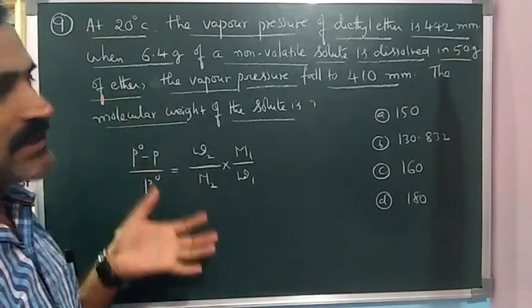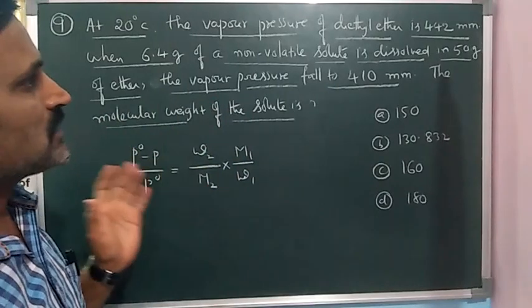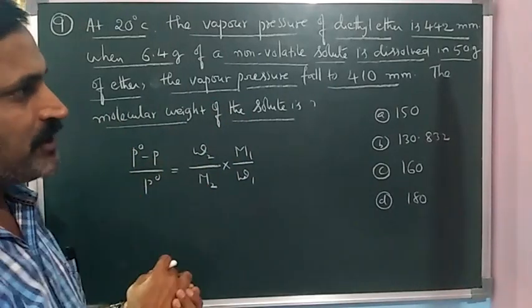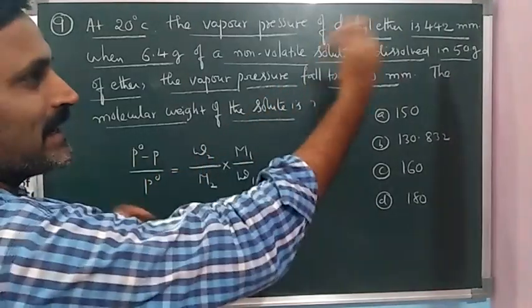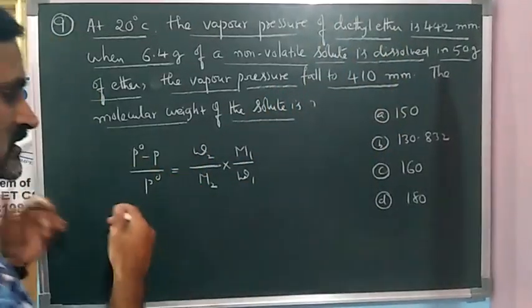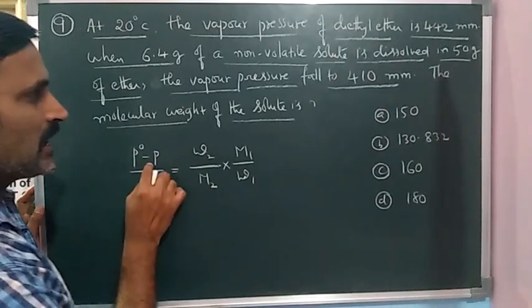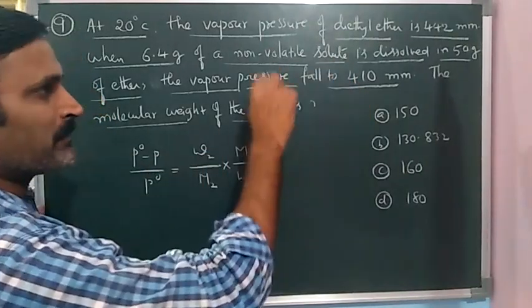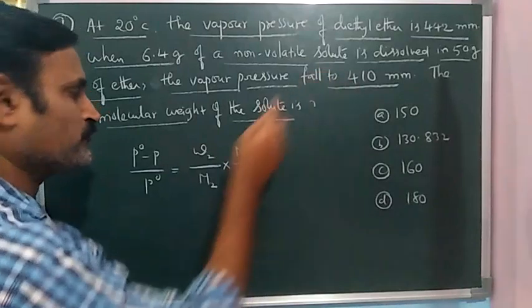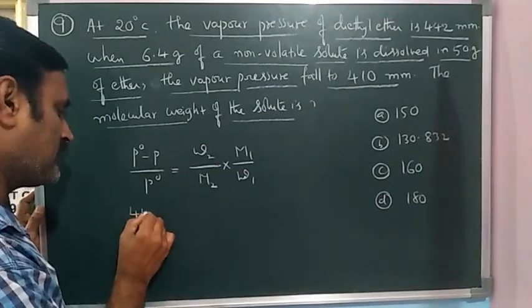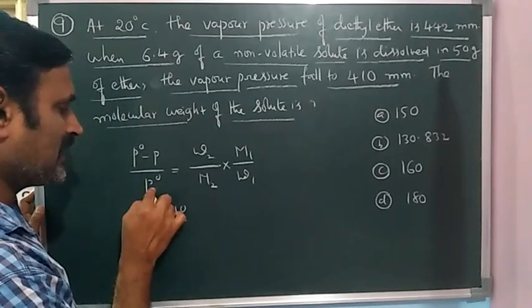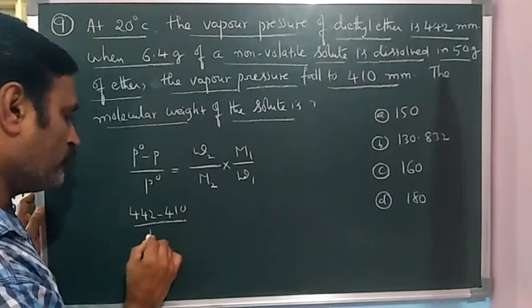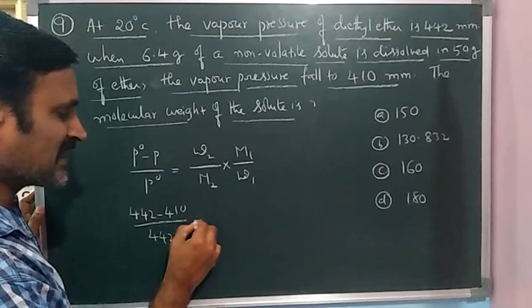Here, ether is solvent, non-volatile solute we don't know and we have to find it. P0 value is the higher value 442, and P value is vapor pressure after adding solute, that is 410. So you can write 442 minus 410 divided by P0 value again 442 in this expression.